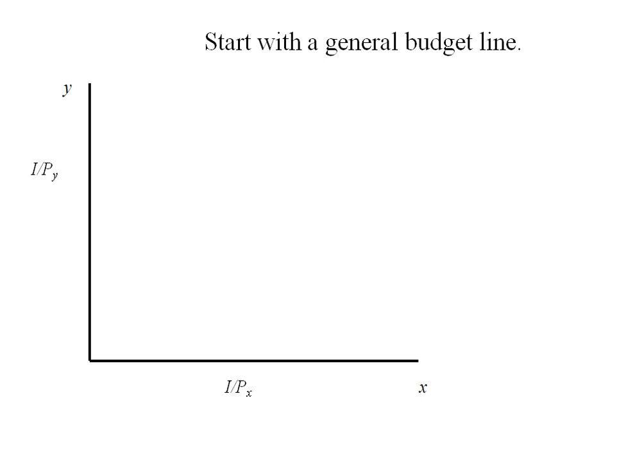Our Y-intercept will be income divided by the price of Y. That will be the maximum amount of Y we can purchase with our income.